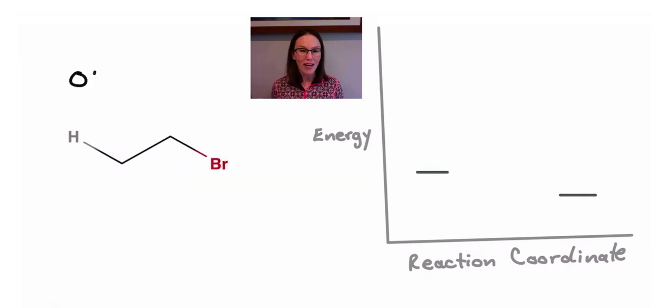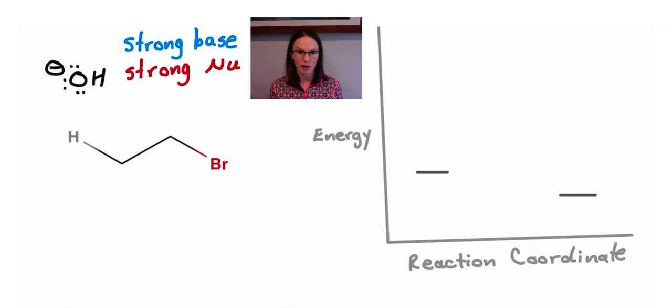Okay, so what happens in this situation where the species colliding with the electrophile is both a strong base and a strong nucleophile? Chemists have determined experimentally that now the structure of the electrophile becomes really important.